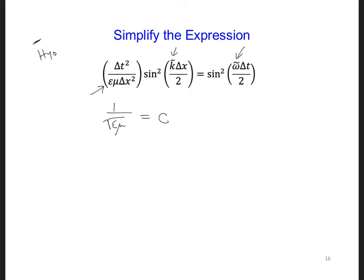So then what we wind up with is sine omega tilde delta t over 2 equals c delta t over delta x times sine k tilde delta x over 2. So here I wrote the right side of the equation first after taking the square root.